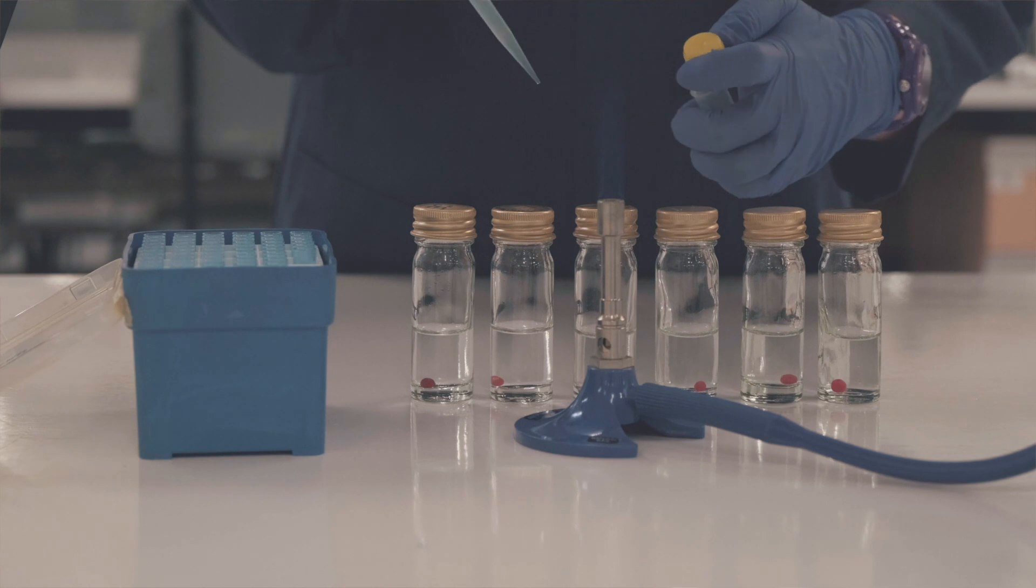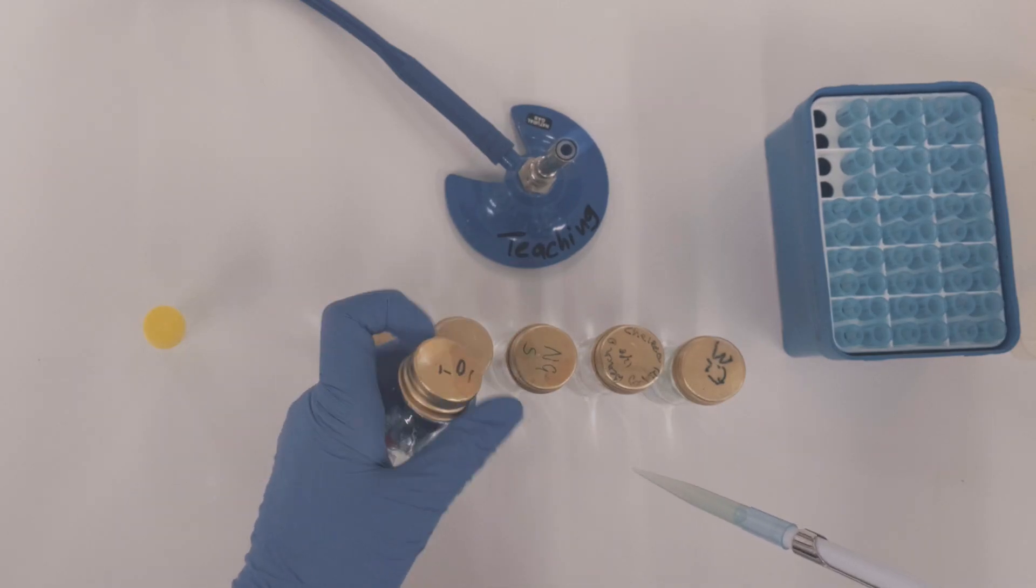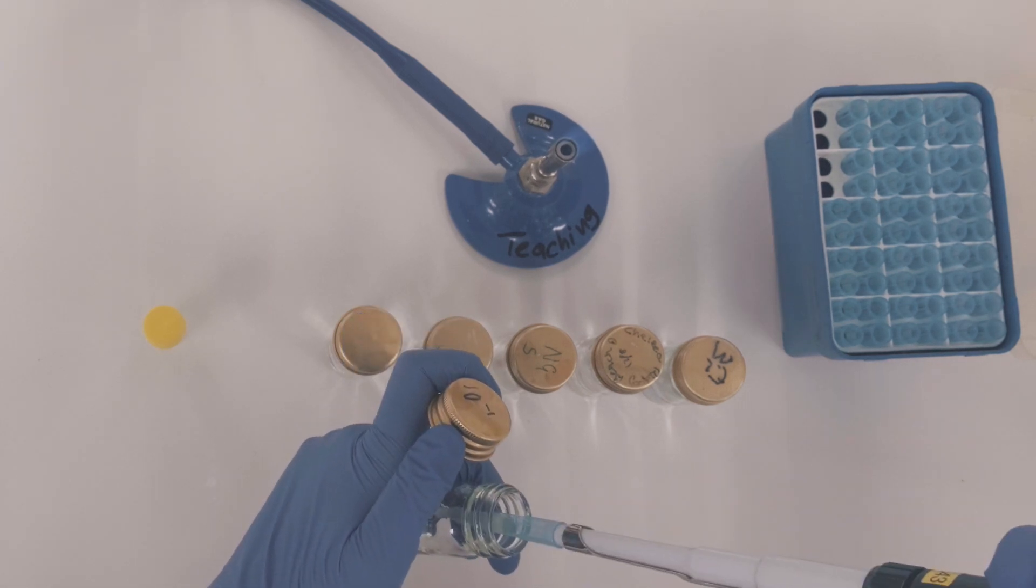If we watch the correct demonstration again in sequence, you can see 9 milliliters of saline is pre-aliquoted out into 6 bottles. 1 milliliter of the original bacterial culture is added into the first saline bottle.